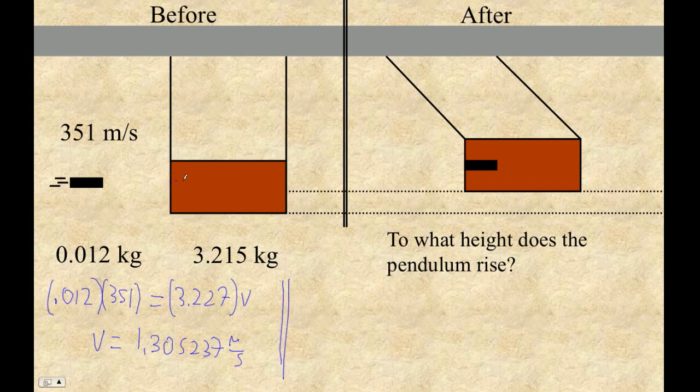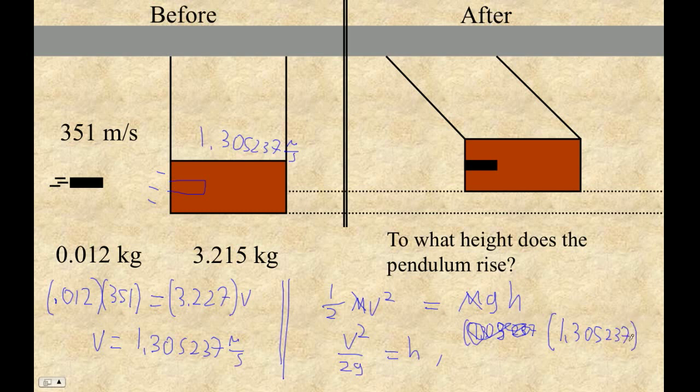Right after the collision, this bullet will stick in the block, and this thing will be moving at 1.305237 meters per second. And then it swings up to some height. That, I think, is a kinetic energy, 0.5 MV squared turns into MGH type of problem. And then, of course, we can cheat here. It's the same mass, and so the height that it swings up to is going to be V squared over 2G. So that's going to be our 1.305237 squared divided by 2 times 9.81.